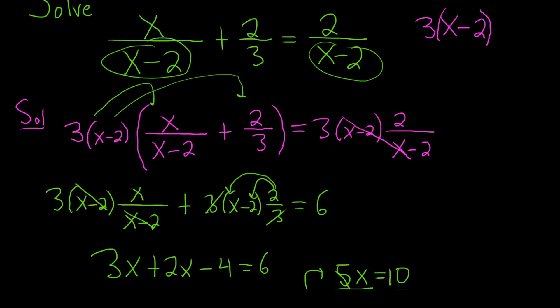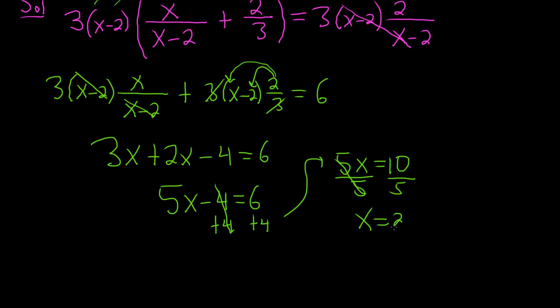So you get 2 over 0, and that's bad. You can't have 0 on the bottom. So in this case, this is not a valid solution. The answer is that there actually is no solution. This equation does not have a solution. Always check that you can take your final answer and plug it back in. In this case, we could not, so there is no solution. I hope this video has been helpful.